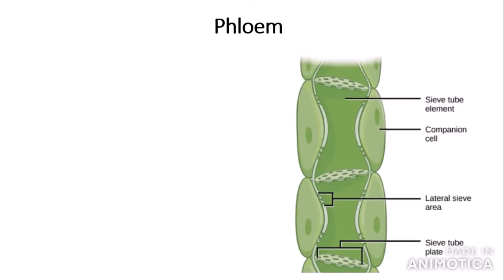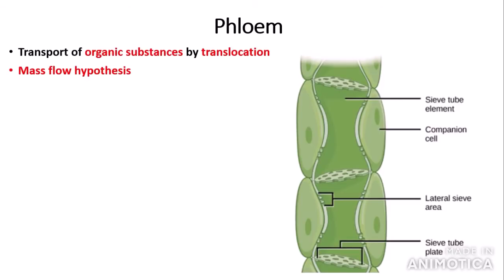Now we're going to talk about phloem. Phloem is the other type of transport vessel in plants, responsible for the transport of organic substances — for example glucose and sucrose — by the process of translocation. This process of translocation is sometimes called the mass flow hypothesis. The structure of the phloem differs from the xylem in that it has cells called sieve tube elements. The things that separate the sieve tubes are called sieve tube plates, which act like filters. Next to the sieve tube elements are companion cells.